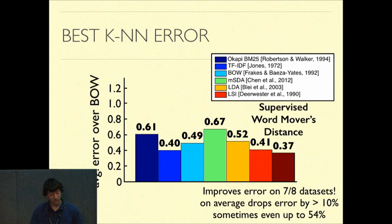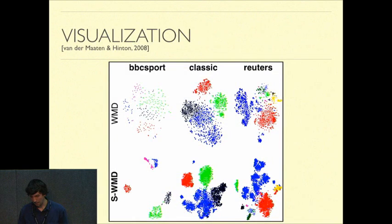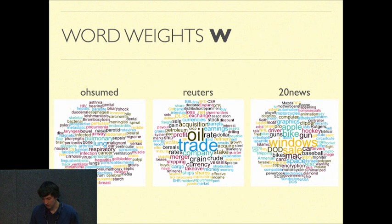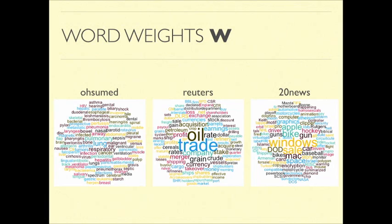We can also visualize what this algorithm, what each of the distances looks like. And the nice thing about the supervised word movers distance is it much more tightly clusters different classes than the word movers distance. We can also look at the word importance weights. And for example, Reuters is a nice classic news categorization data set. Words like oil and trade are very important for distinguishing a news document about economics versus one about sports. So it's up weighted.